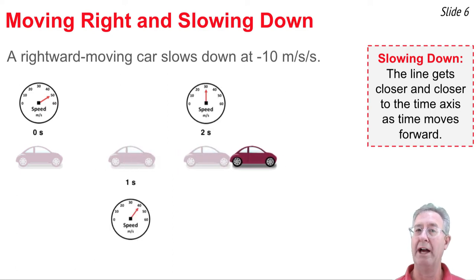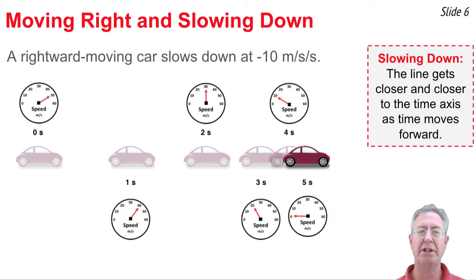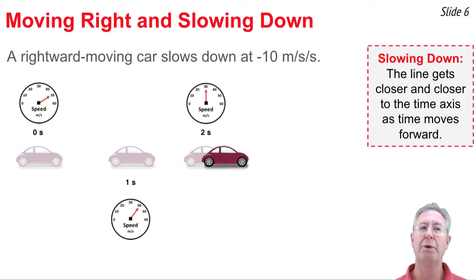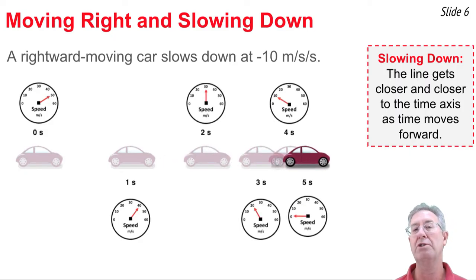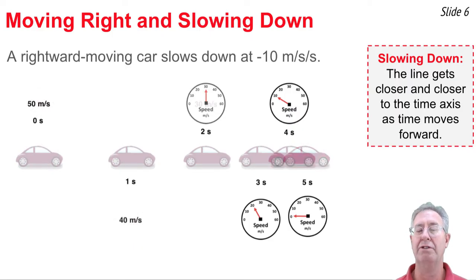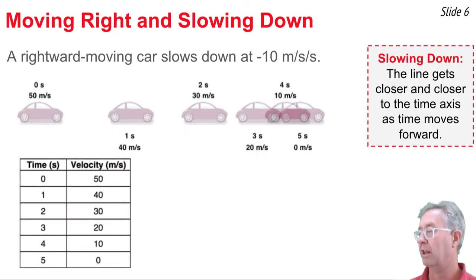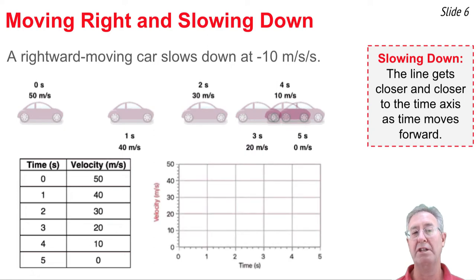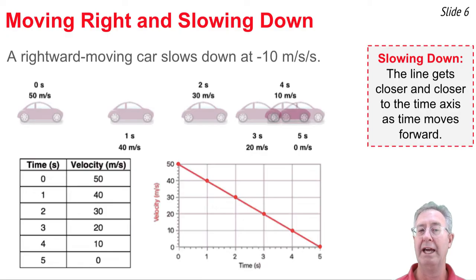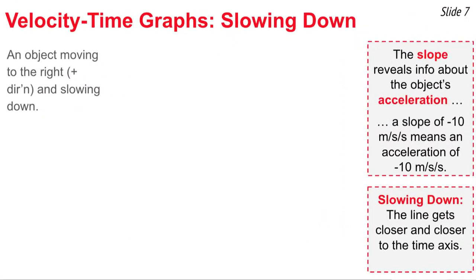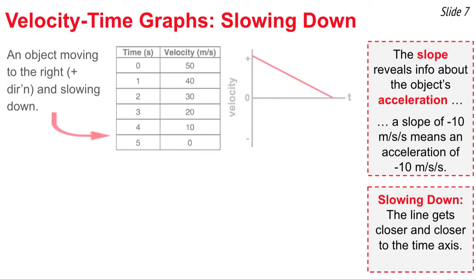Now consider a car moving to the right and slowing down with an acceleration of negative 10 meters per second per second. The car starts at 50 meters per second and loses 10 meters per second of speed every second. Gathering these values into a table and plotting them on a velocity-time graph, the points line up along a diagonal line with negative slope. The slope gives us information about acceleration: when acceleration is negative 10, the slope is negative 10 meters per second per second.